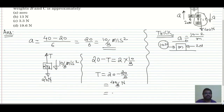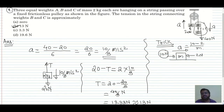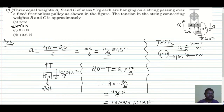That gives approximately 13.33 N, which we round to 13 N. So the answer is 13 N. This master trick — acceleration = (greater force − smaller force) / total mass — can solve any pulley problem, block problem, or any type of problem.